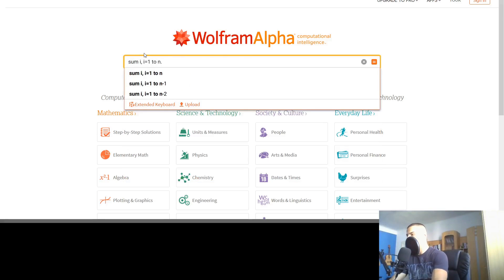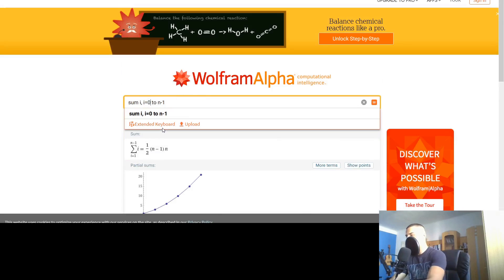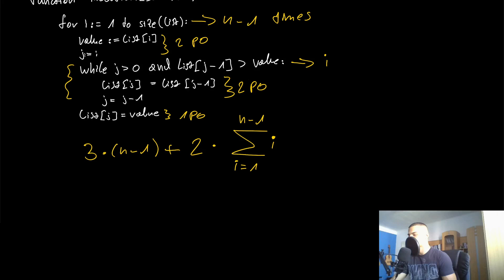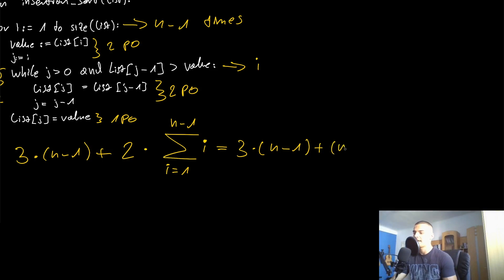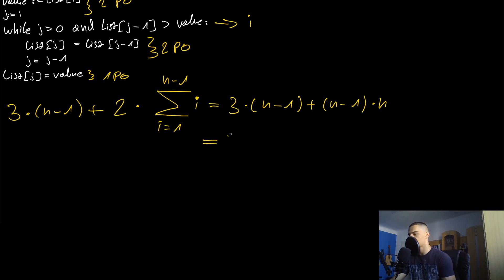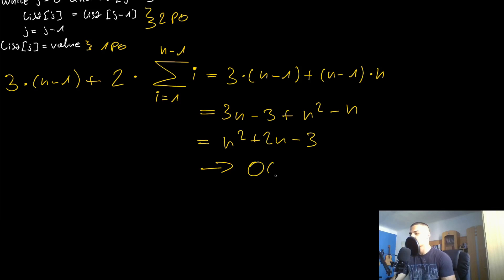So we have 3(n-1) + 2 * (1/2)(n-1)(n). The two and one-half cancel out, leaving 3(n-1) + (n-1)(n). Expanding: 3n - 3 + n² - n = n² + 2n - 3. This means the worst case runtime complexity is in big O of n squared — quadratic — just like the other inefficient sorting algorithms we've covered.